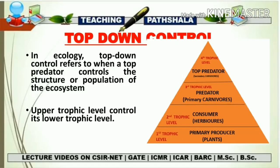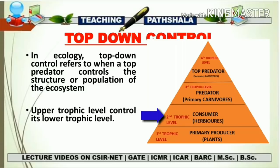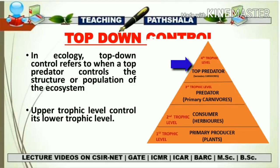We will start with top-down control. Let's first look at the trophic levels represented in the form of a pyramid. There are a total of four trophic levels. The first is the primary producer — for example, plants. The second is the herbivore consumer, which feeds on the primary producer. The third is the predator, also known as the primary carnivore, feeding on the consumer. The topmost level is the top predator, or secondary carnivore, which feeds on the primary carnivore.